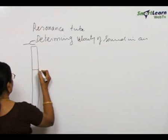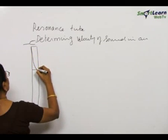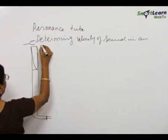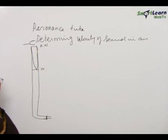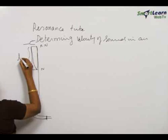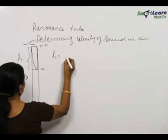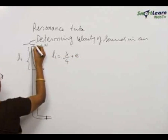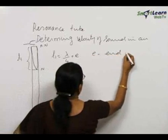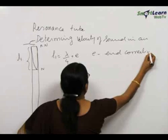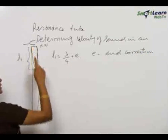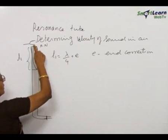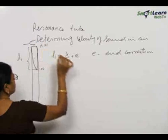When we reach a point called resonance, it is like a closed tube with a node at the bottom and an anti-node at the top, and standing waves are produced inside. We measure this length as L1, and L1 = λ/4 + E, where E is the end correction. The anti-node is not formed exactly near the mouth of the tube — it is formed a little above the mouth of the tube, and this distance is called the end correction E.